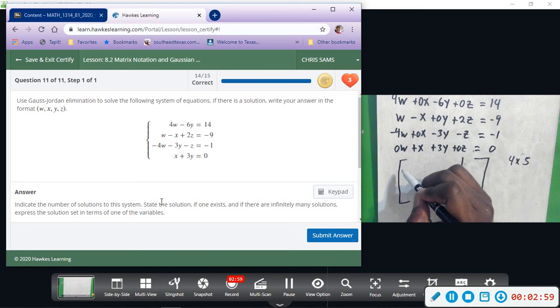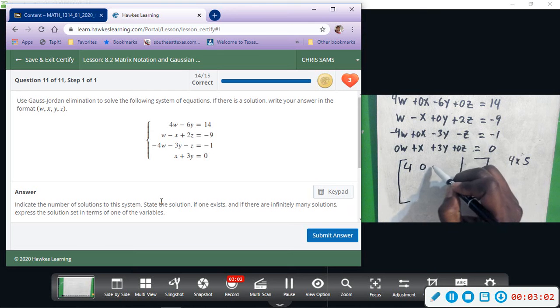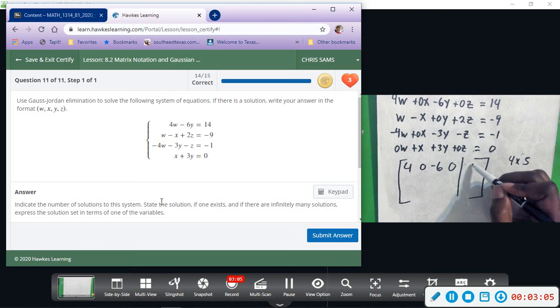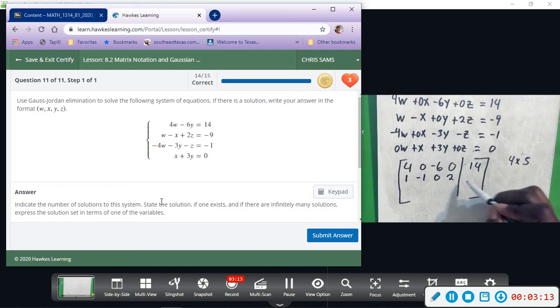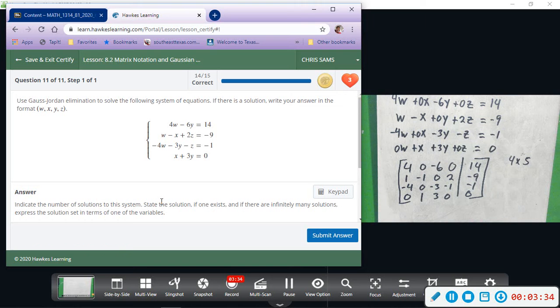Listing the coefficients only, the numbers, we have 4, 0, negative 6, 0, and then 14. Then we're going to have 1, negative 1, 0, 2, negative 9. Then negative 4, 0, negative 3, negative 1, negative 1. And then 0, 1, 3, 0, 0. So this is what we're going to be putting in the calculator for the matrix. All right, so let's do that now.